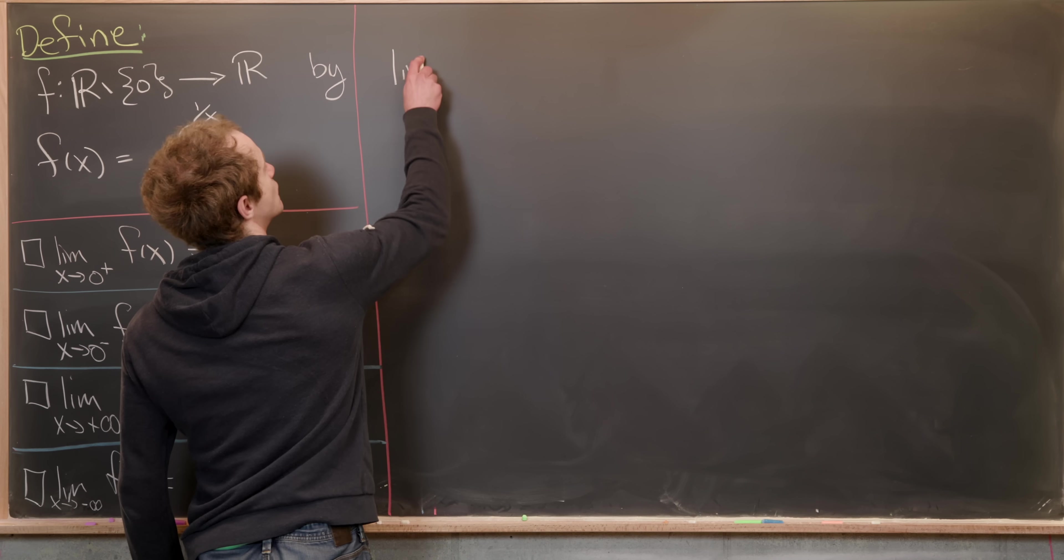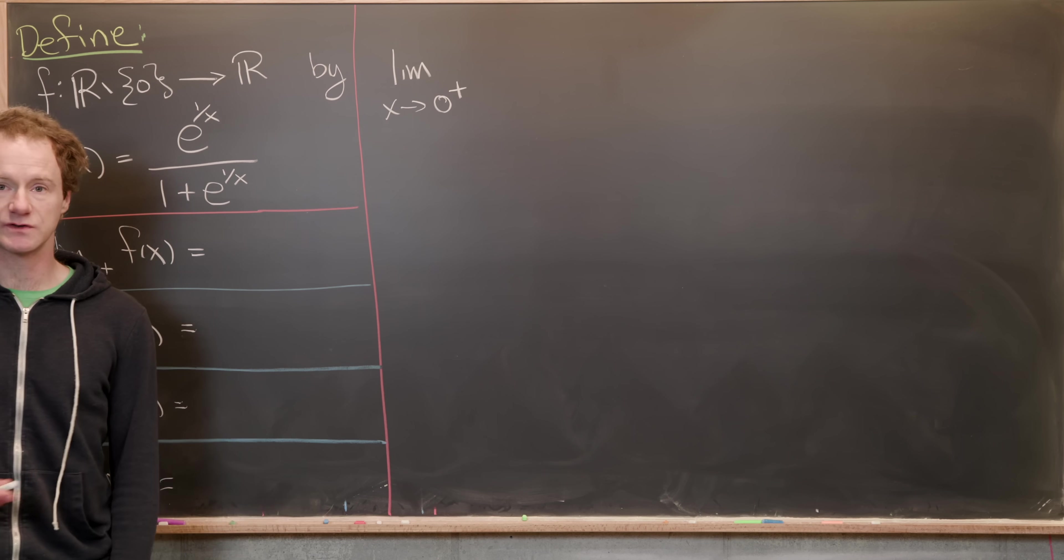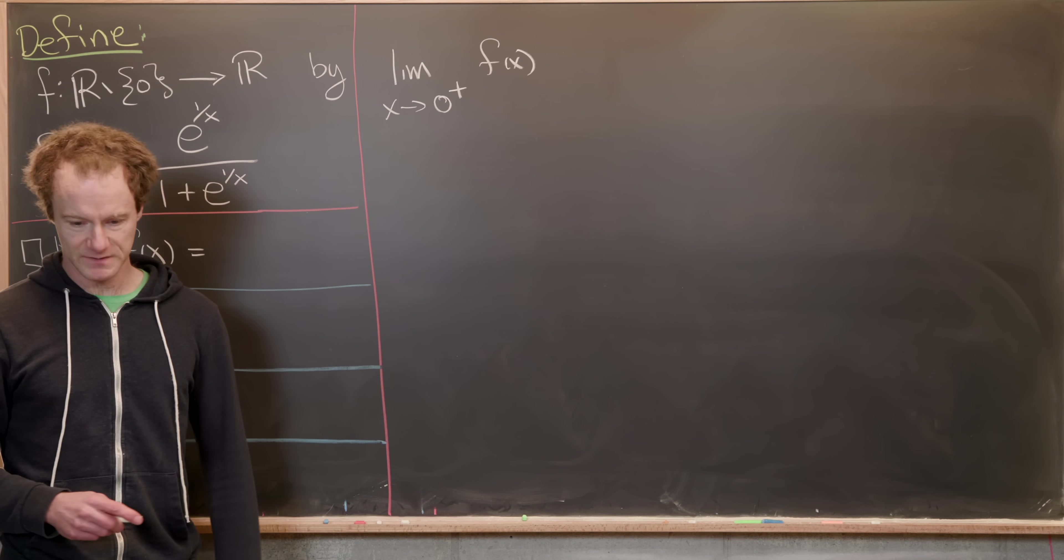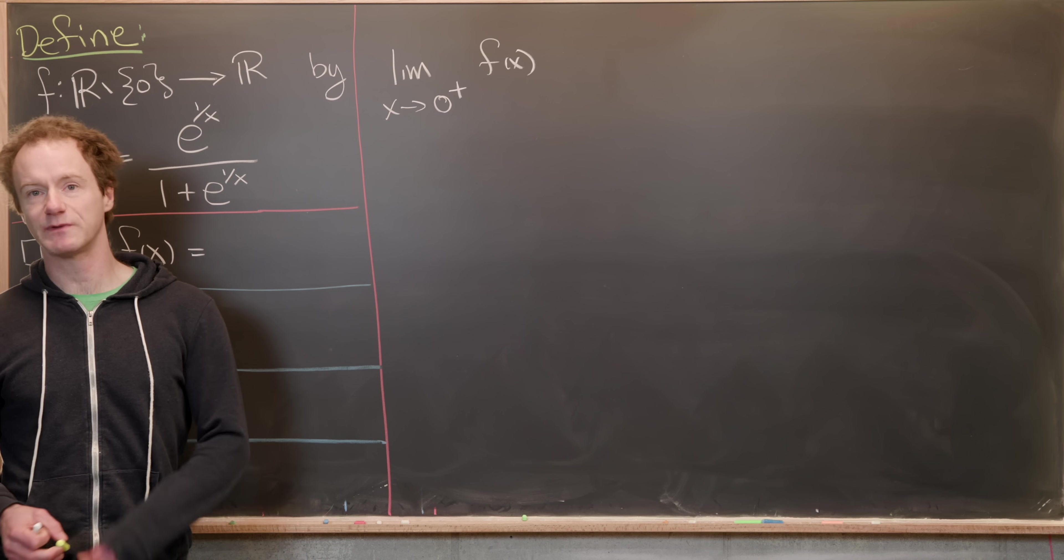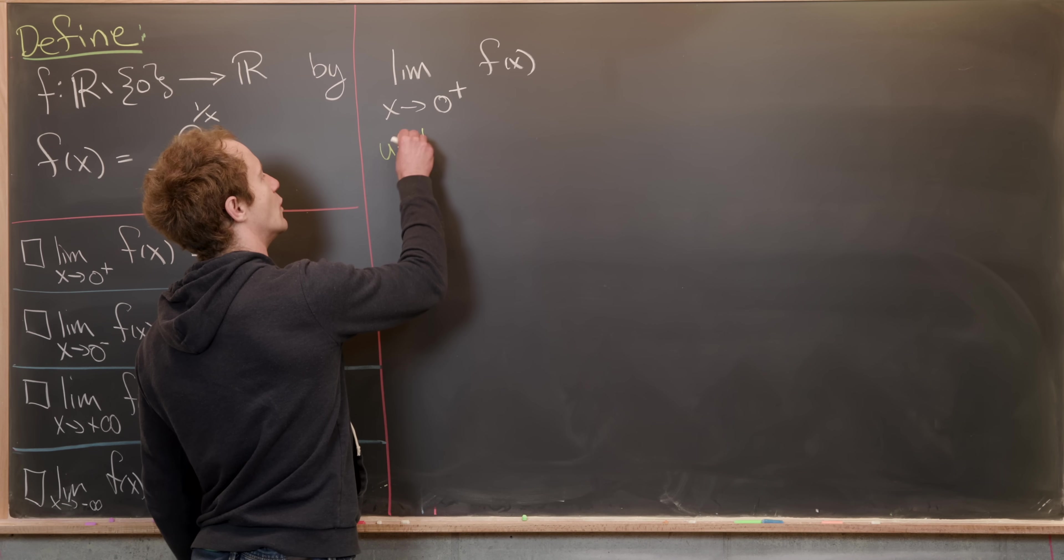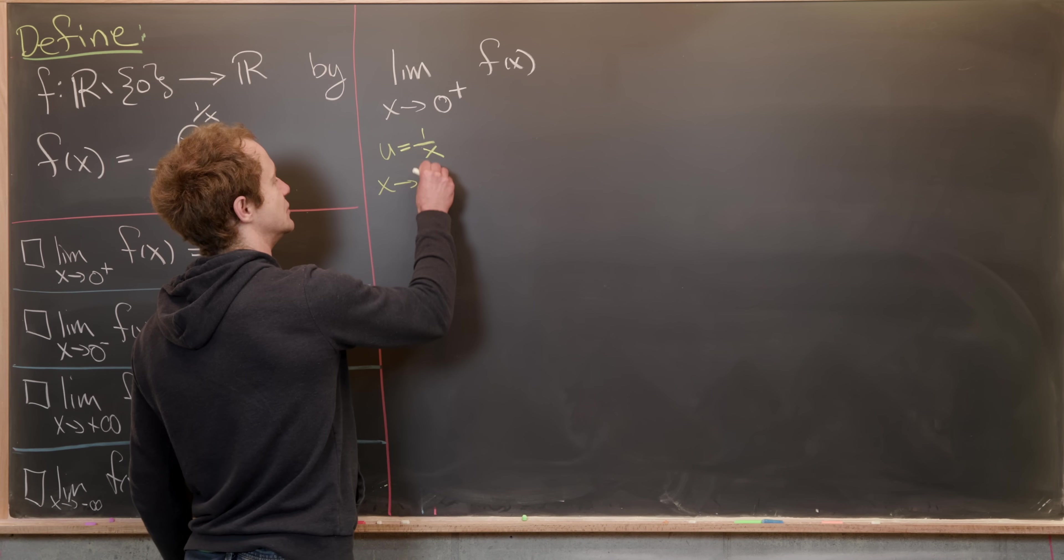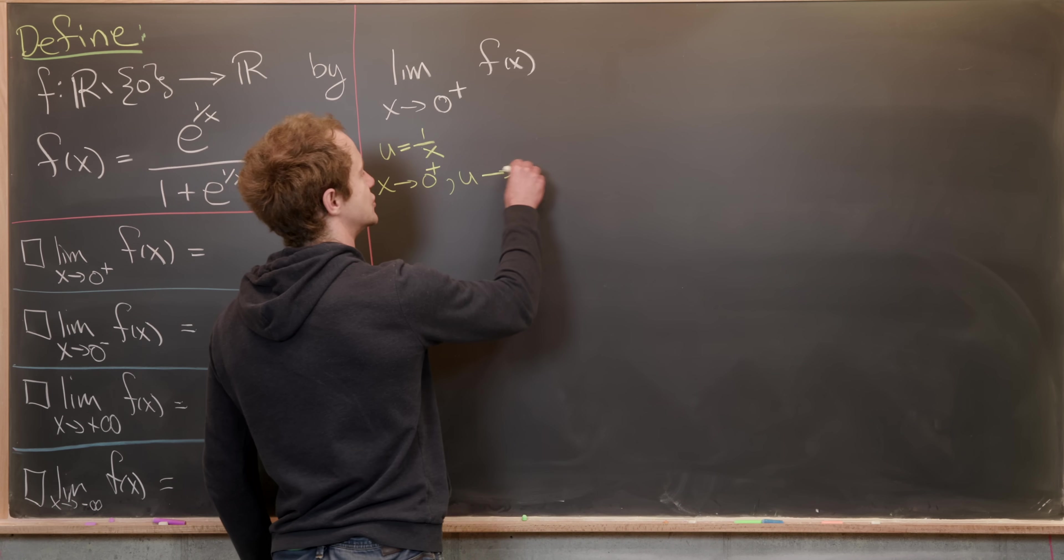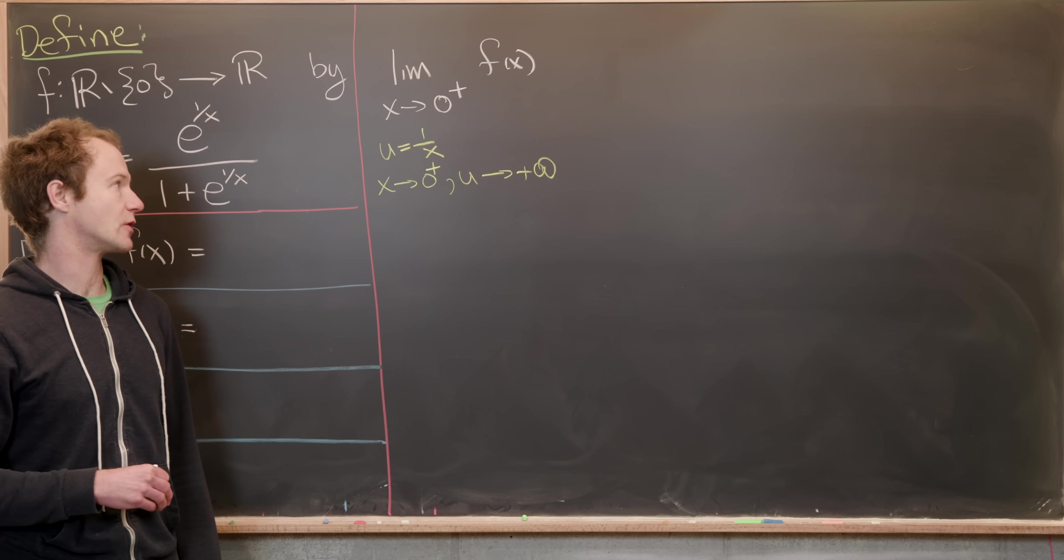Okay, so let's go with this right-handed limit first. So we've got the limit as x goes to zero from above of f(x), like that. So first off, what I want to do is do a bit of a change of variables that simplifies this. So let's maybe go ahead and let u equal one over x. And notice, as x goes to zero from the right, u is going to plus infinity. That's actually going to make this a little bit easier to calculate.